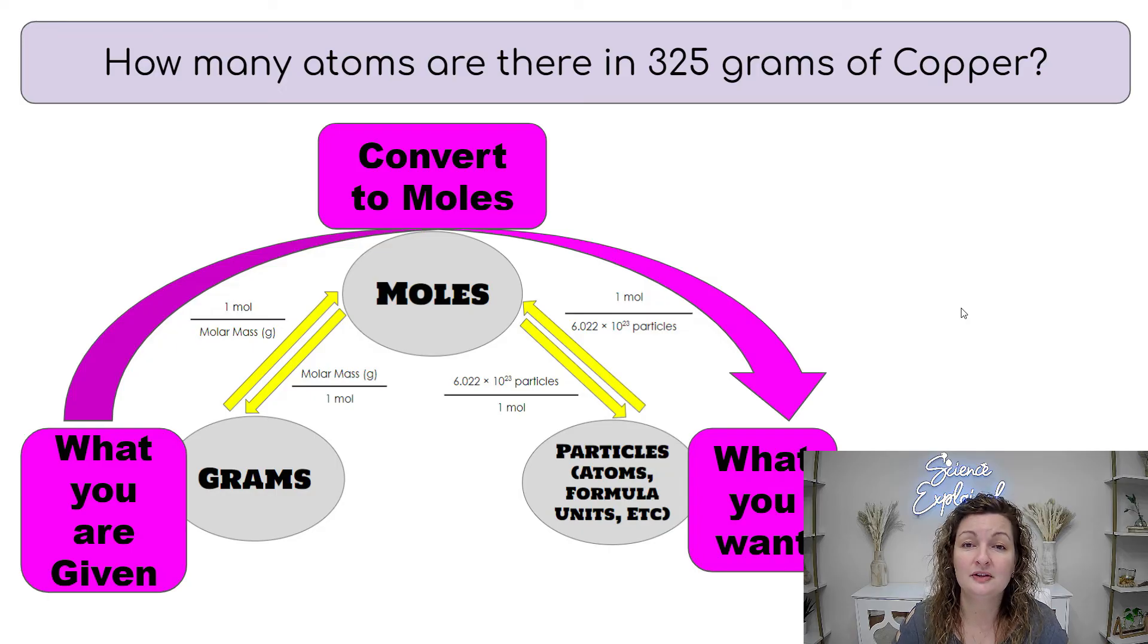How many atoms are there in 325 grams of copper? Well, we're going to start with grams this time. So we're starting over here and we want how many atoms. So we need to finish with atoms, which is a type of particle over here. So we're going to go from grams to moles and then back down to atoms.